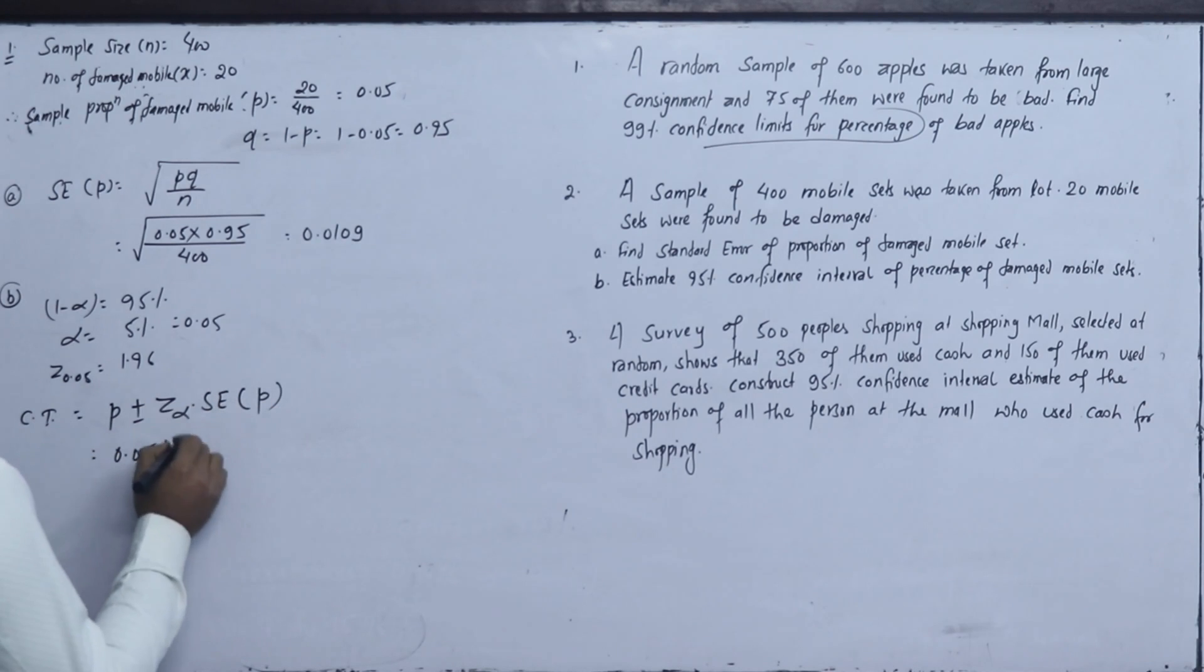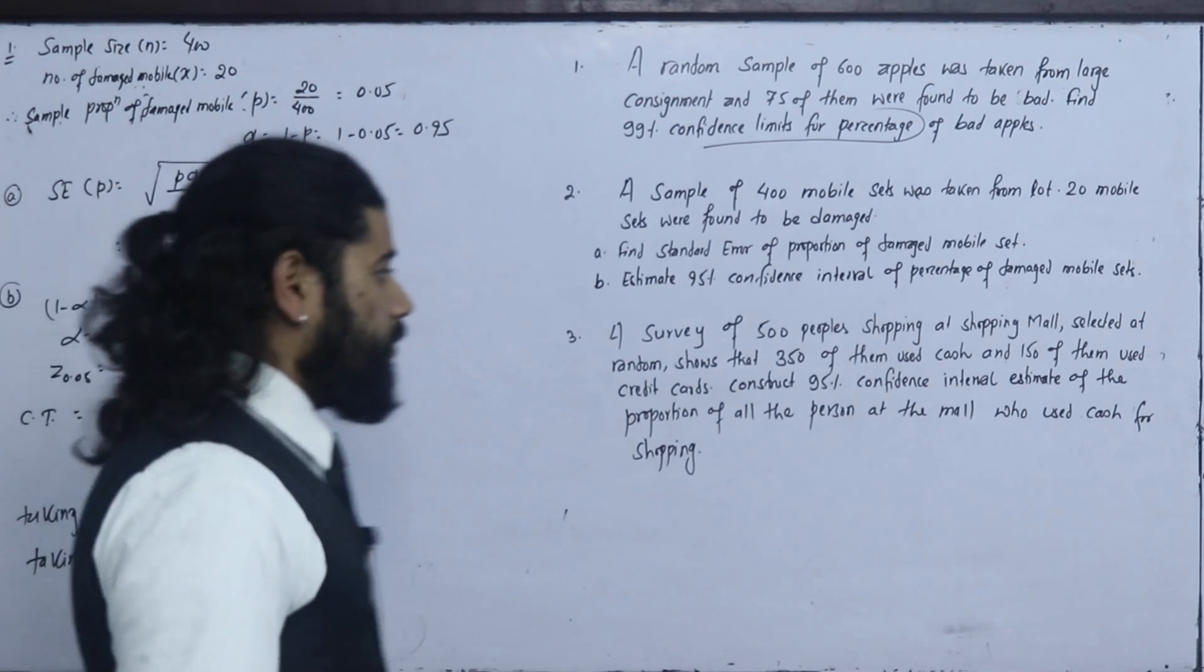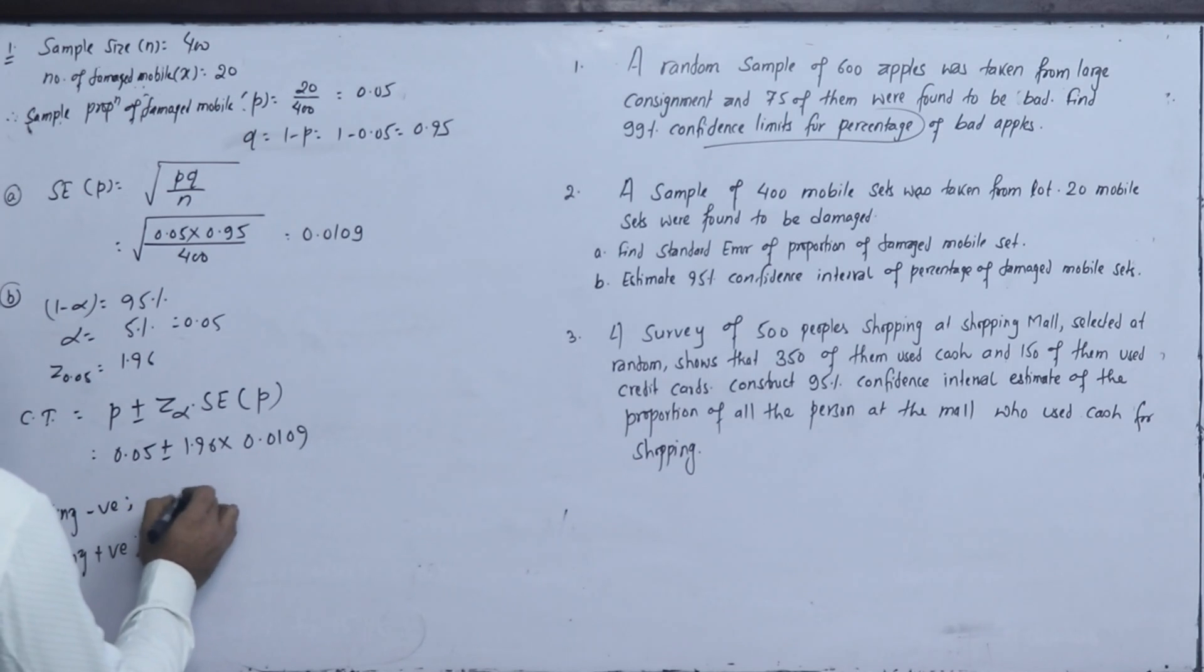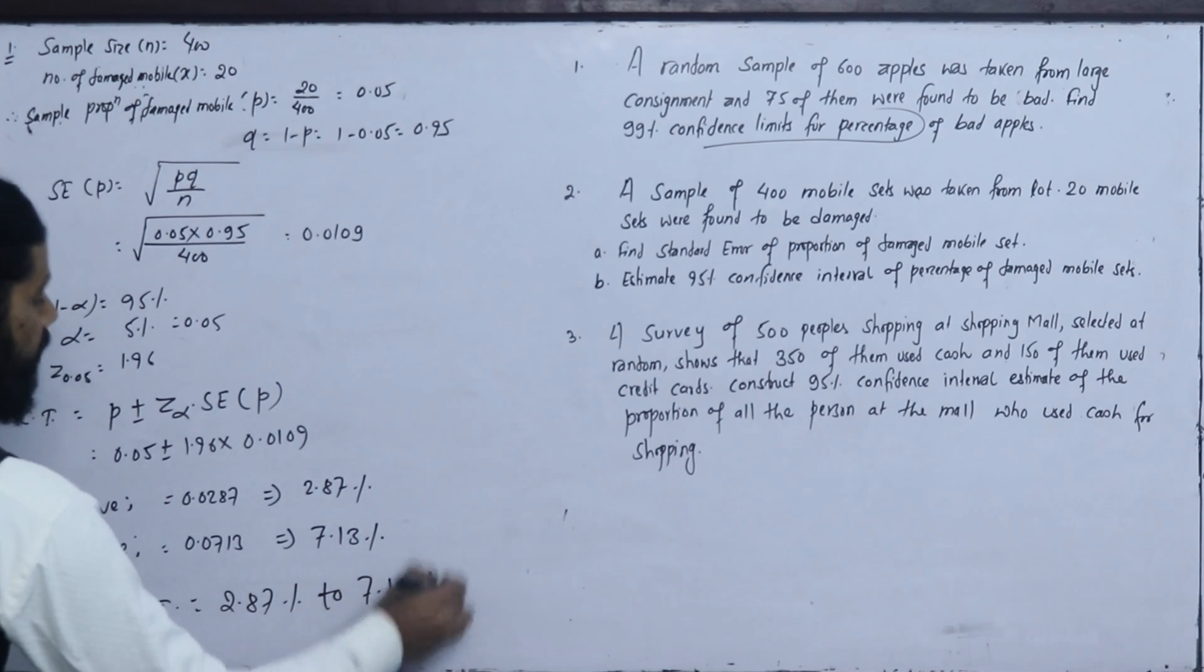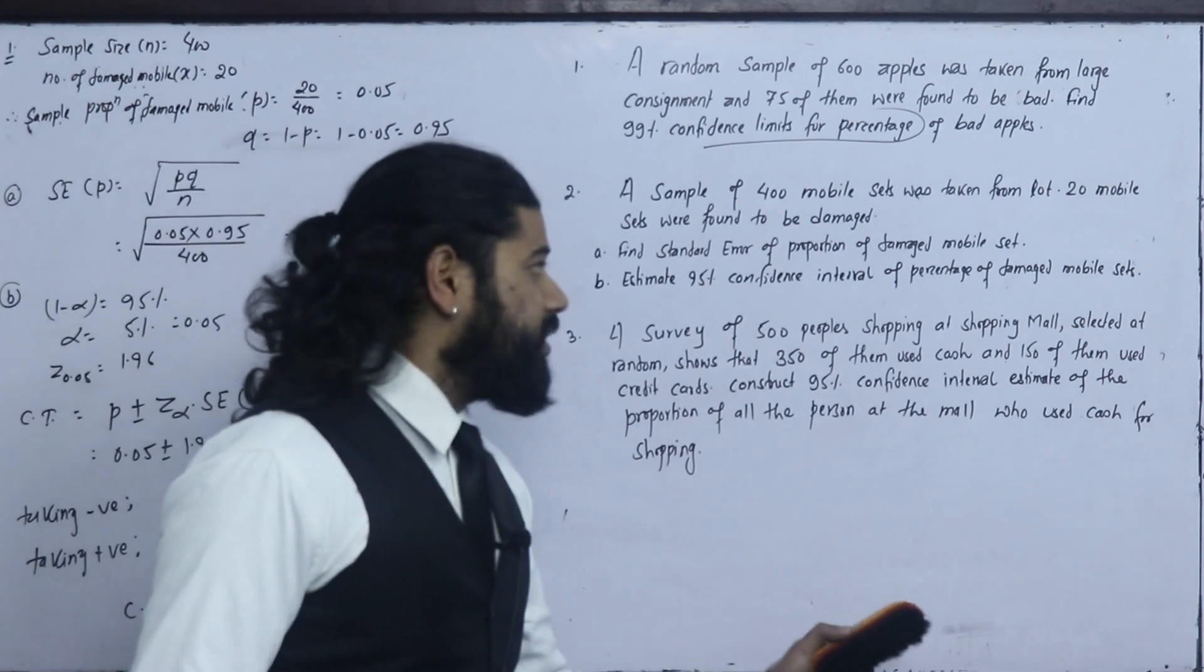0.05 plus minus 1.96 into standard error 0.01094. Taking negative we get 0.0287, taking positive we get 0.0713. As percentage, 2.87 percent to 7.13 percent. This is the confidence interval for damaged proportion.